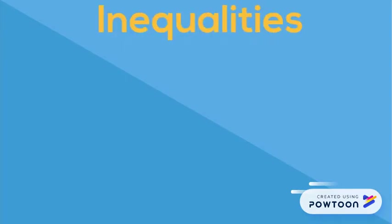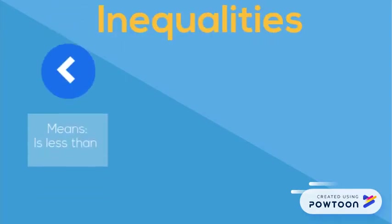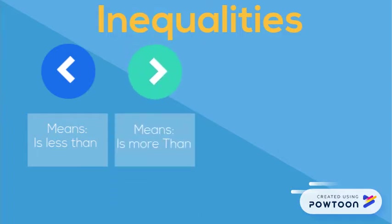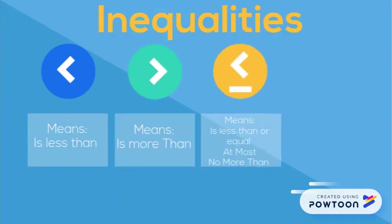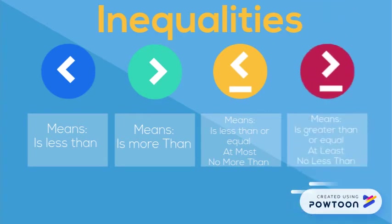Inequalities. The first symbol is the less-than symbol. Next is the greater-than symbol. Next is the less-than or equal-to, also called 'at most' or 'no more than.' And finally, the greater-than or equal-to symbol, also called 'at least' or 'no less than.'